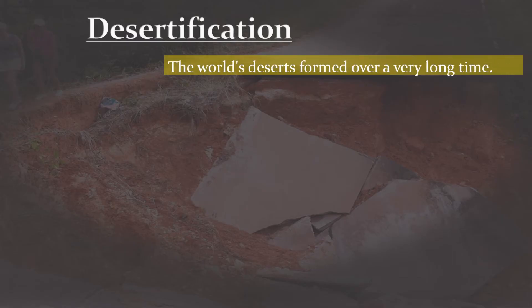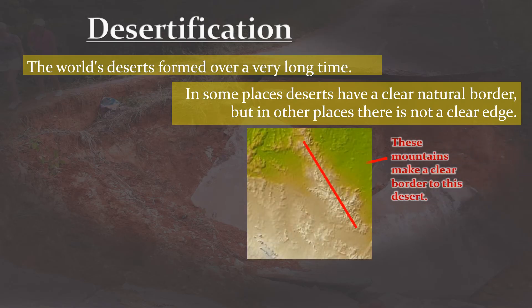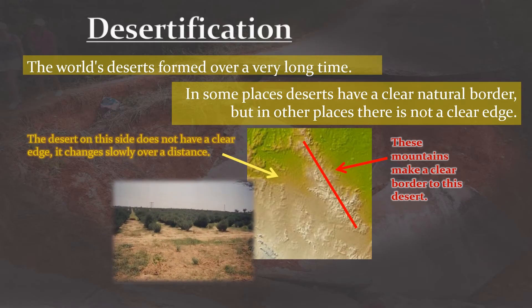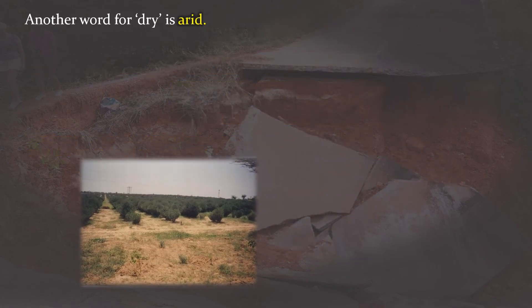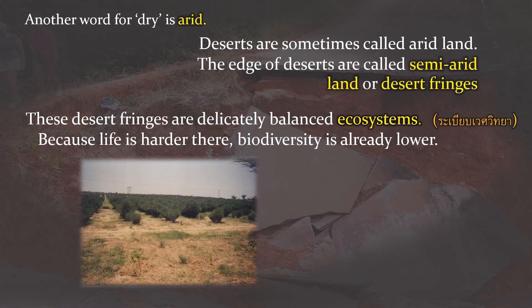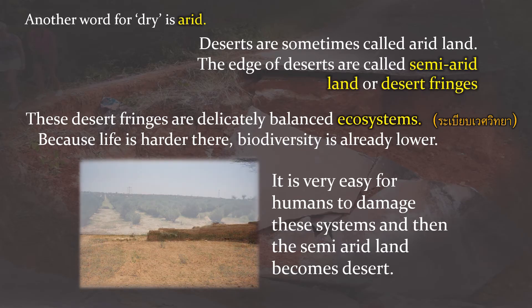The world's deserts formed over a very long time. In some places there is a clear natural border to a desert, like a mountain range, but in other places it is not so easy to see where the change takes place, and this is what we call semi-arid land, like you see in the picture. It is not completely desert, but on the other hand it is not completely fertile either. The word arid is another word for dry, and deserts are sometimes called arid land. The semi-arid land is the edge of deserts, or desert fringes, and because these places can be lower in biodiversity — because life is harder there — the ecosystems can be very delicately balanced. It is very easy for humans to damage these systems, and then the semi-arid land becomes full desert.